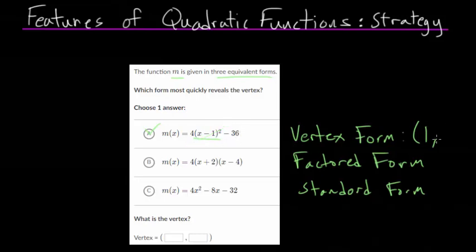So when we put the one in there we get negative 36 as our y value. So that's our vertex. We can just plug that in here, 1 comma negative 36.